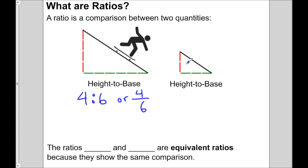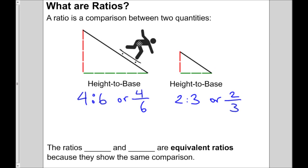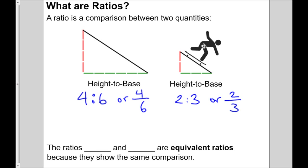Now let's take a look at this smaller ramp. It has a height of two and a base of three. So a height to base ratio for this smaller ramp could be written as two to three using a colon, or as a fraction two over three. The interesting thing is that the ramps, if you take a look, are equally as steep. If I grab my skateboard guy and move him over to this ramp, you'll notice that it's just as steep.